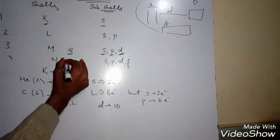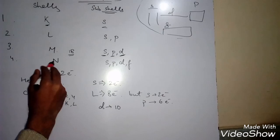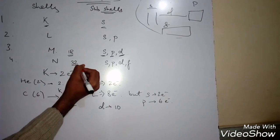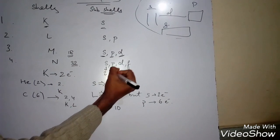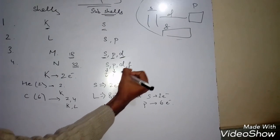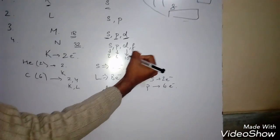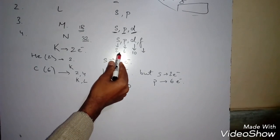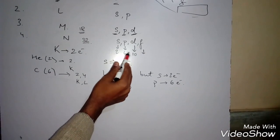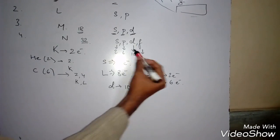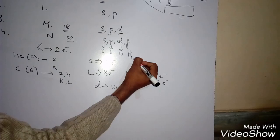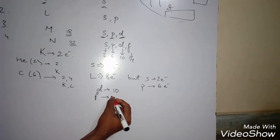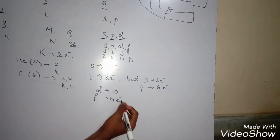In the N shell, the total electrons are 32. S contains two, P contains six, D contains ten. So F will contain: 2+6=8, 8+10=18, 32−18=14. So F contains fourteen electrons.